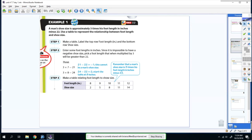To represent the relationship between foot length and shoe size, when we're creating an equation, we follow the format y = mx + b.